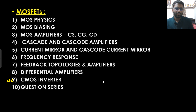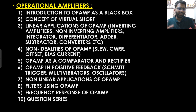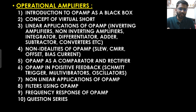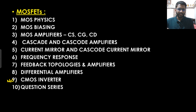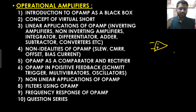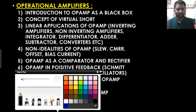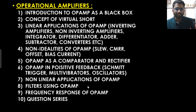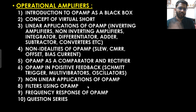After MOSFET, we are going to cover operational amplifiers in very in-depth detail — it is one of the most important topics. We will first see it as a black box, then how an op-amp is made from a differential amplifier. Then we will cover everything: nonlinear applications, linear applications, integrator, subtractor, adder, differentiator, inverting amplifier, non-inverting amplifier, and non-idealities like slew rate, CMRR, input offset, output offset, and input bias current.